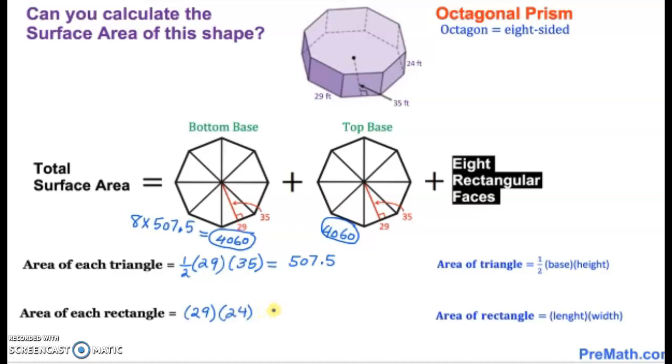And again, let's go ahead and do that. And we see that we have an area of 696. Okay, so again, that's one rectangle. Now we're going to multiply that by eight because there are eight of them. So eight times 696, we multiply that out, we get 5,568. So now we've got our area of our eight rectangles.